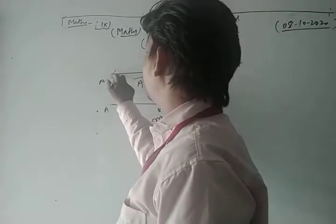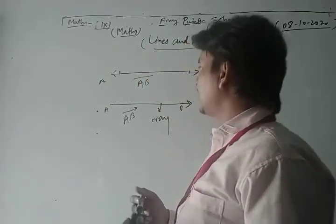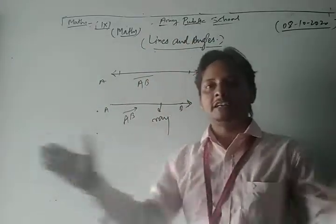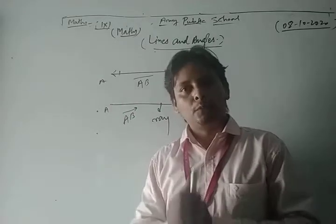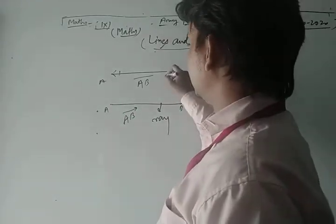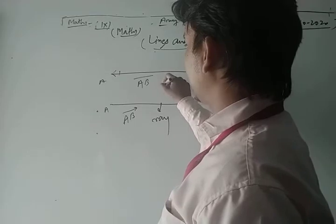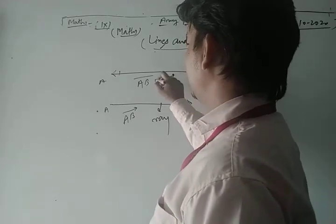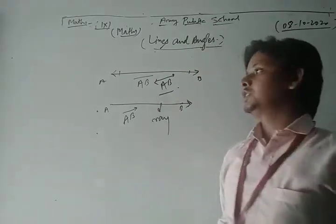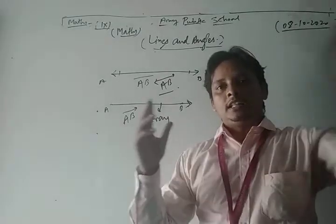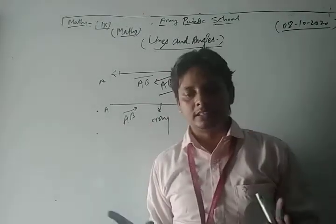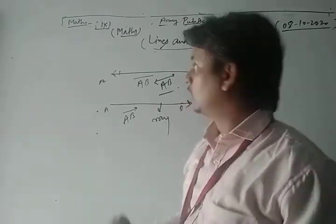If a line segment is extended in both directions, it is said to be a line. A line may be denoted in this way — this is the representation of a line. So this is the concept of line.